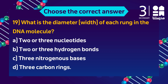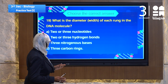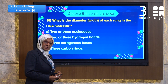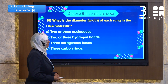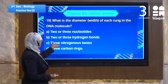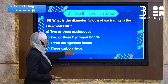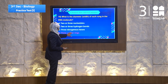Question 19: What is the diameter width of each rung in the DNA molecule? The DNA contains a sugar-phosphate backbone and the diameter consists of nitrogenous bases — purines and pyrimidines. Purines consist of two carbon rings and pyrimidines consist of one carbon ring. The answer is three carbon rings total: two purines plus one pyrimidine.